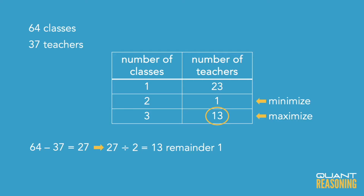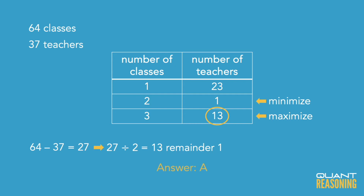One teacher has two classes, and the rest have one class. So the maximum possible value for N here would be 13. There's only one answer choice that has a maximum of 13 teachers for N, so we're done. The correct answer is A.